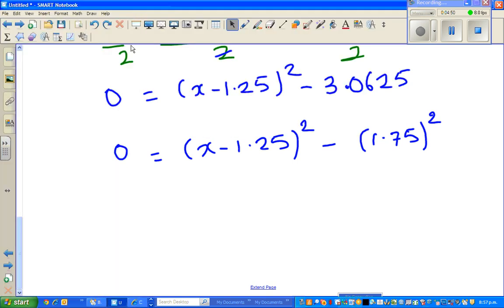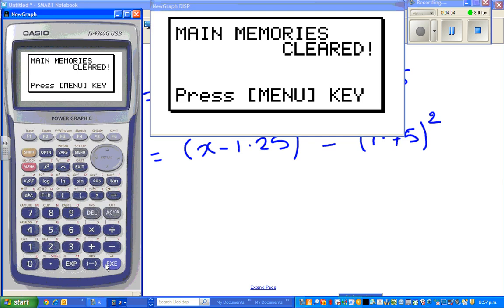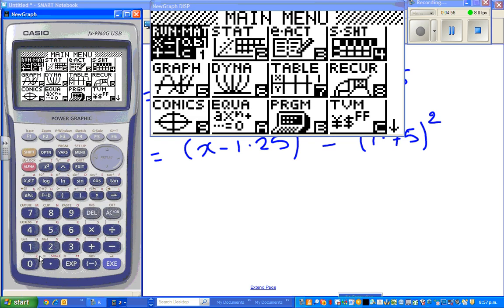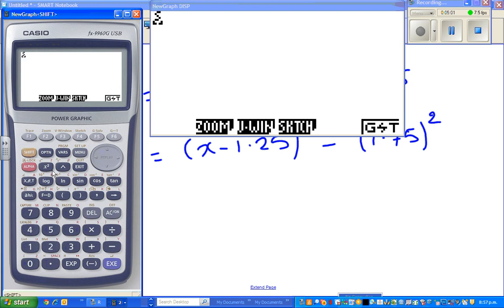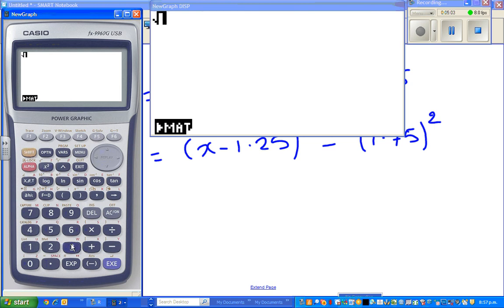This is scroll down, run and execute. Let me close this. Open a new calculator. So menu, run and square root, shift, square root of 3.0625 equal. That's 1.75.